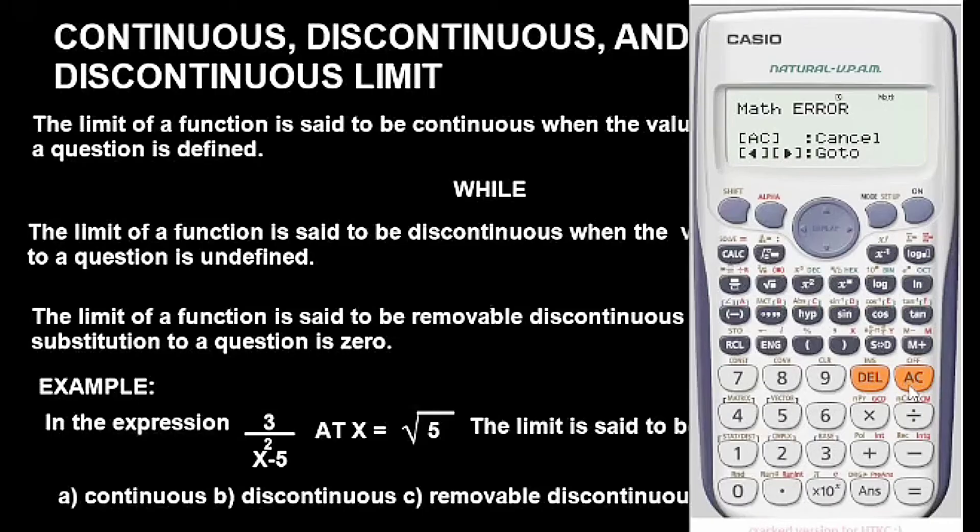But since we didn't get a definite value, neither did we get zero, this is a discontinuous limit. So this is basically how you can know when a limit is continuous, discontinuous, or removable discontinuous. It's as simple as that.